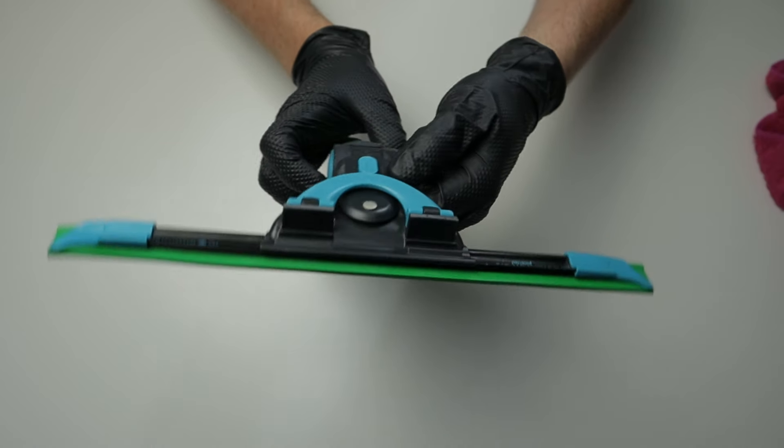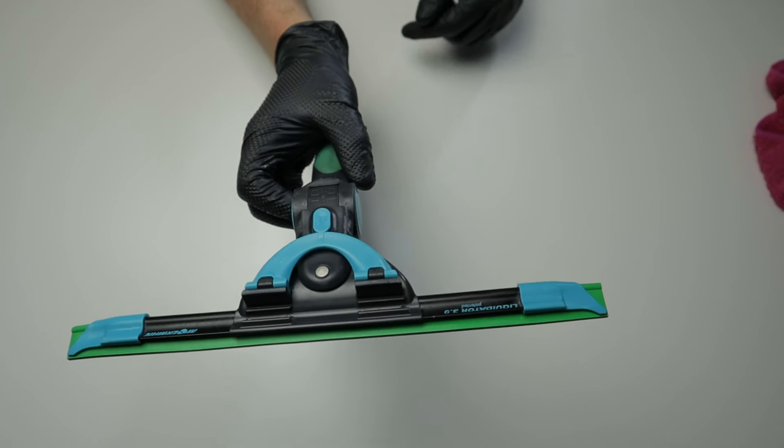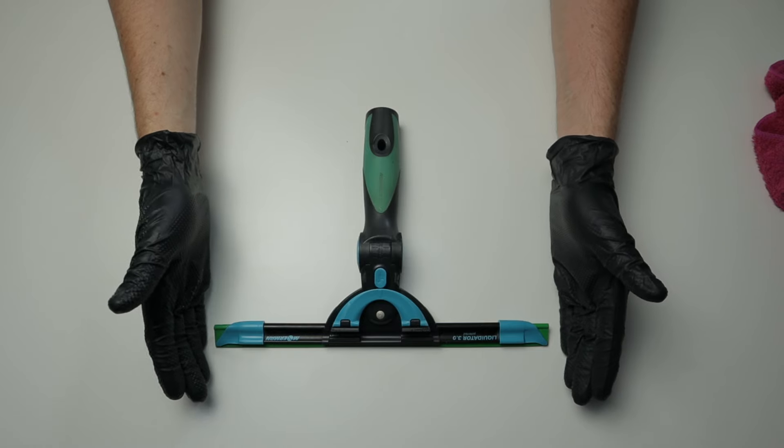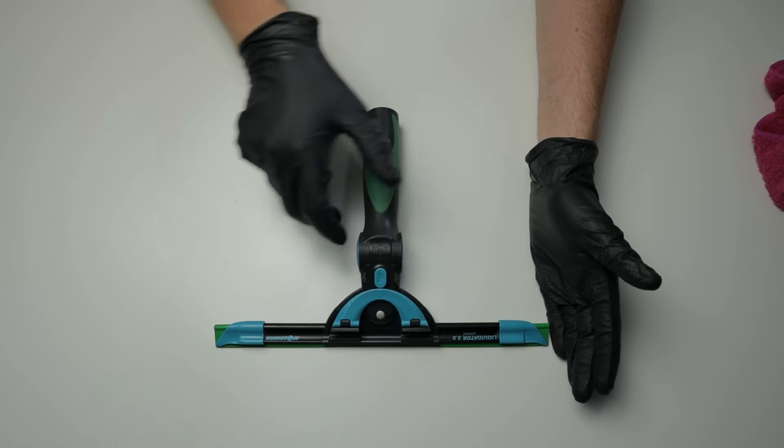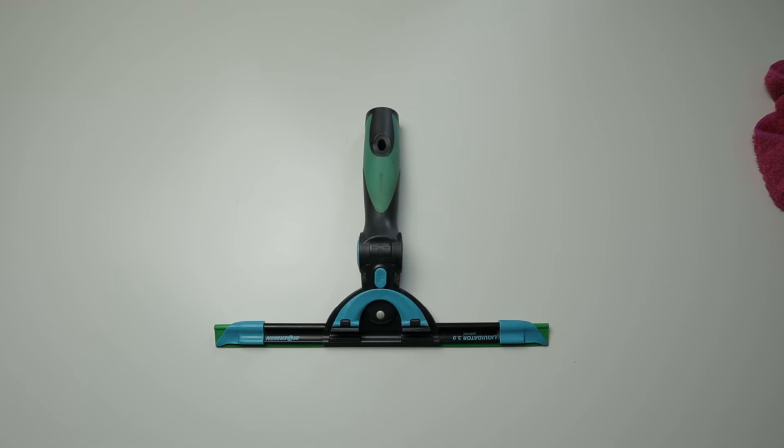And that's it ready to go. That is the Mormon Liquidator Precision Squeegee with the rubber, how to get the rubber in. The rubber must be flush with the ends of the clip, and also the right way around. So this is how you set up the precision tool for window cleaning.